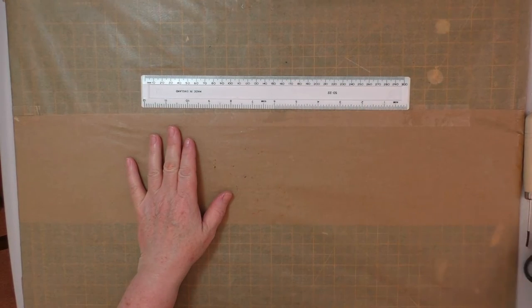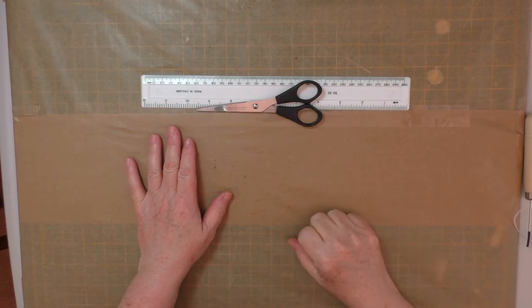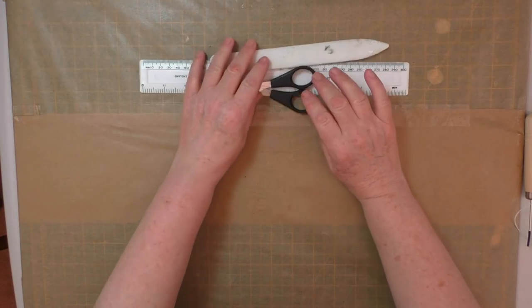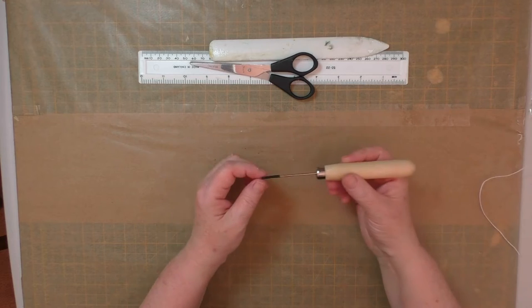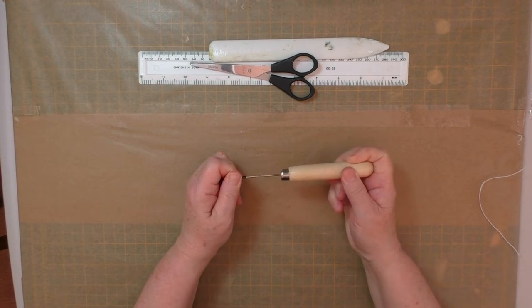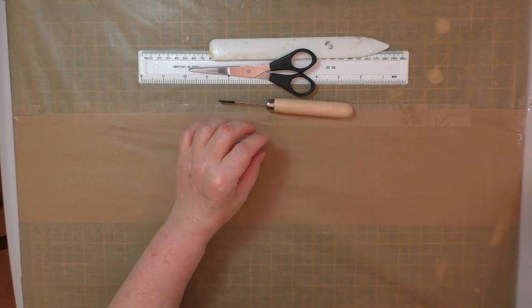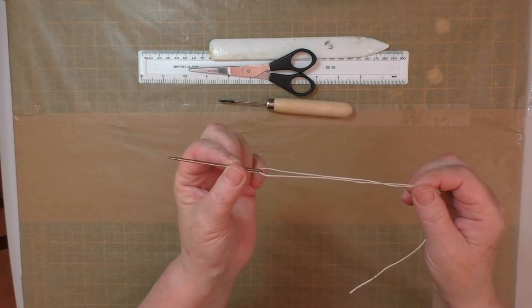Minimum tools are required for this: a ruler and/or a pair of scissors and a bone folder, although the back of the scissors would also do. The only other thing you'll need is an awl or a pokey tool and a needle and some thread of some sort.